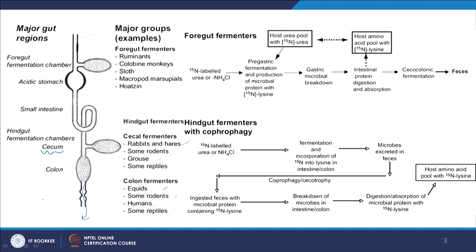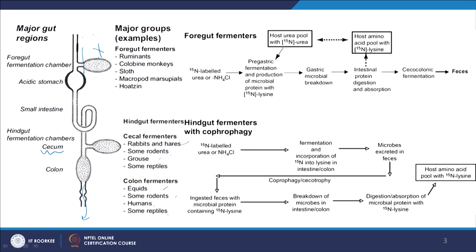This advantage is not present with hindgut fermenters like ourselves. For hindgut fermenters, the food does not pass through a foregut fermentation chamber; food directly goes to the acidic stomach, undergoes initial degradation, and then undergoes cecal fermentation or colon fermentation. All the biomass that is produced in the cecum or colon is excreted out directly, and that is one reason why our fecal matter is so rich in microbes.